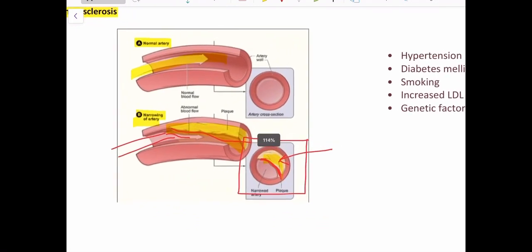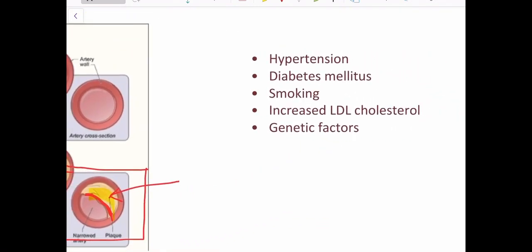What are the factors that contribute to atherosclerosis? One is hypertension, which is high blood pressure. Diabetes mellitus and habits like smoking. Increased LDL cholesterol. There are two main types of cholesterol: HDL and LDL. HDL is the good thing to have and LDL is the bad thing to have. When a person has poor dietary habits like increased consumption of fat, the LDL cholesterol levels increase, and that can contribute to atherosclerosis. Also genetic factors, because if your family members have this, then you are at risk.